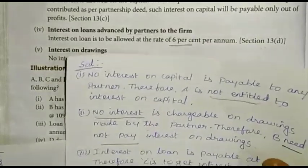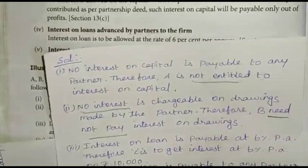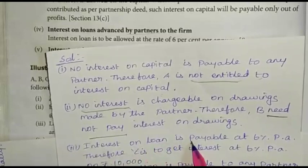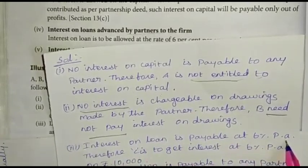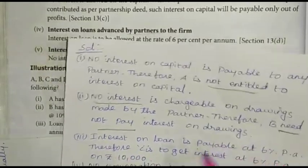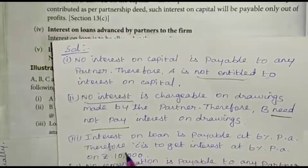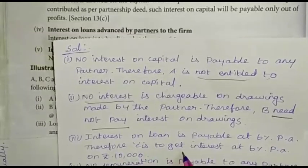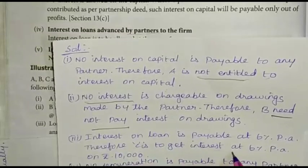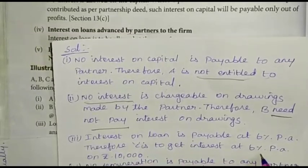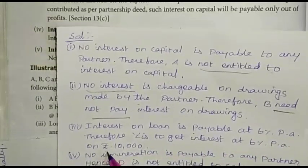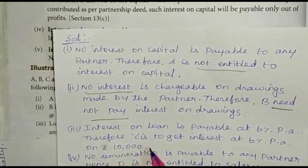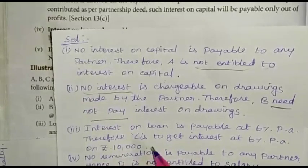Solution: Interest on loan is payable at 6% per annum. Therefore, C is to get interest at 6% per annum on Rs. 10,000.